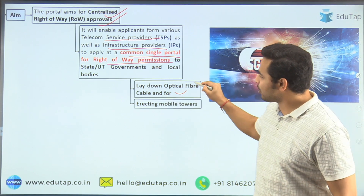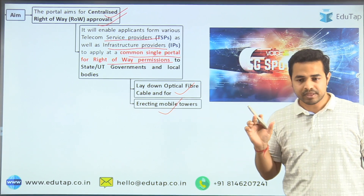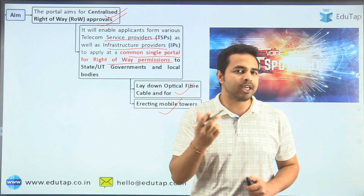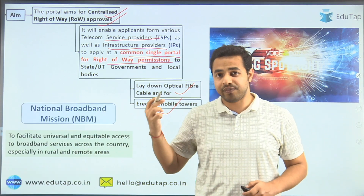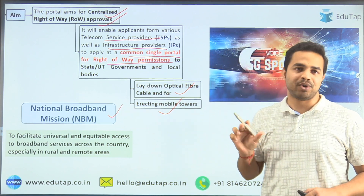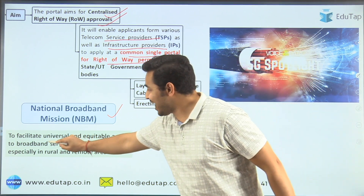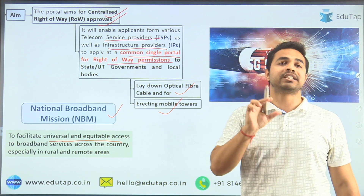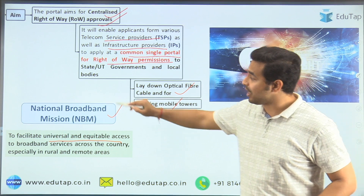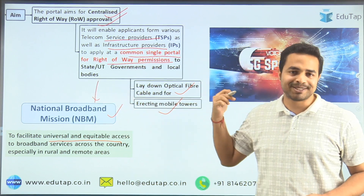The different activities for which applications are being filed include laying down optical fiber cables as well as erecting mobile towers. This portal has been launched keeping in view the areas under the National Broadband Mission, which was launched on 17th December 2019. This mission facilitates universal and equitable access to broadband services across the country, especially in rural and remote areas, and to achieve its targets, the Government of India has come up with this portal.